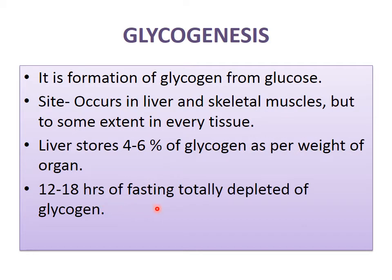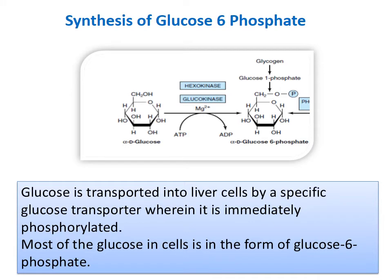The first step in glycogenesis is conversion of glucose into glucose-6-phosphate, which we have already seen in glycolysis. Glucose is phosphorylated in the presence of the enzyme glucokinase, because this process takes place only in the liver. In other tissues the enzyme is only hexokinase; in liver both glucokinase and hexokinase are present. In the presence of magnesium ions, ATP is converted to ADP and donates one phosphate to the glucose molecule, converting it into glucose-6-phosphate. This glucose is transported into the liver cell by a specific glucose transporter and is immediately phosphorylated.